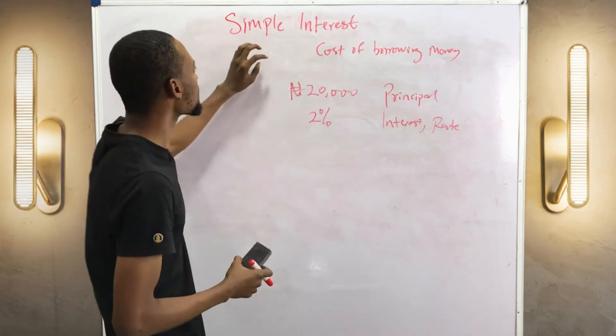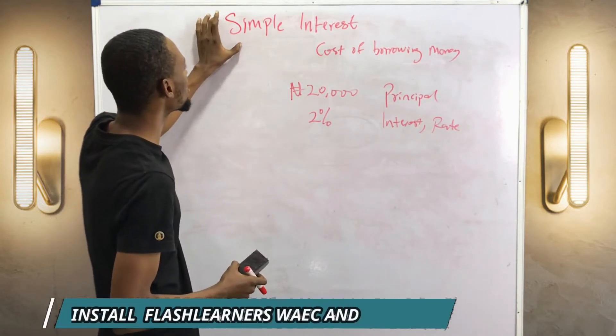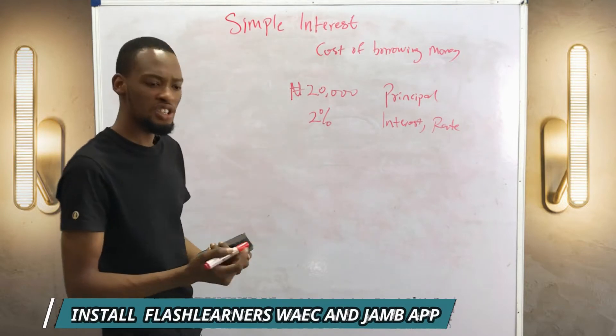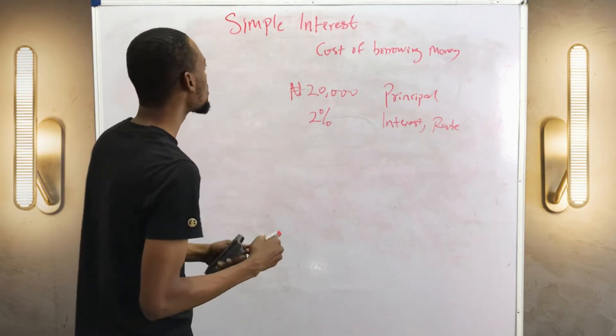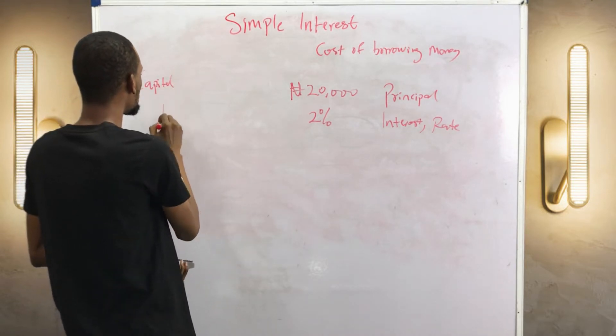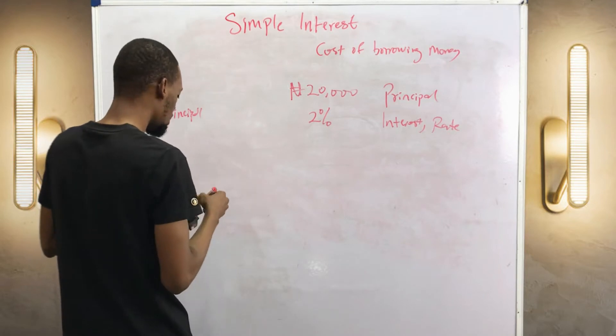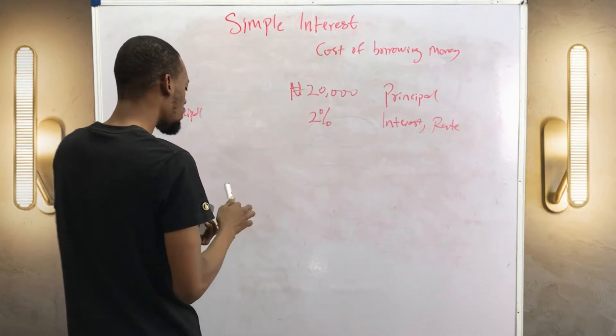We have simple interest and compound interest, but why is this called simple interest? It is called simple interest because the capital, the principal, is fixed over the period.